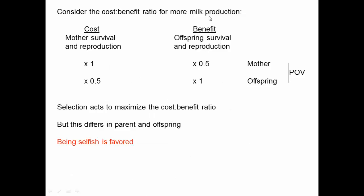Let's think about a cost-benefit ratio for more milk production in mammals, such as through longer weaning or more milk per day. The cost is to the mother's survival and future reproduction — individuals that provide more milk have reduced chances of surviving and their future reproduction will likely be compromised. The benefit of increased milk production is to the offspring's survival and their own potential future reproduction. From the mother's point of view, the costs are fully realized in terms of the genes in that mother, but the benefits are discounted by 50% because any particular allele in the mother has only a 50% chance of being in the offspring. From the offspring's point of view, the cost of additional milk production is discounted by 50% because for each allele in the offspring, there's only a 50% chance it's in the mother who would be suffering this reduced survival. But the benefit is fully realized — any allele in the offspring that results in increased milk production would receive the full benefit.